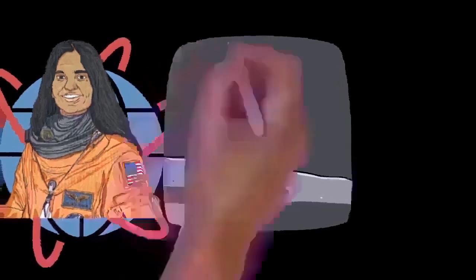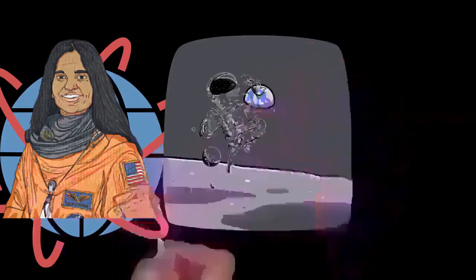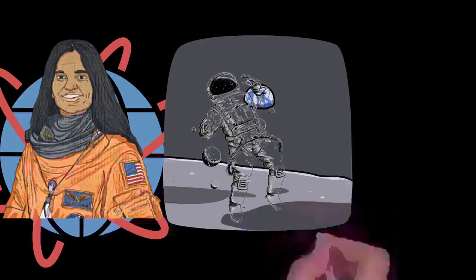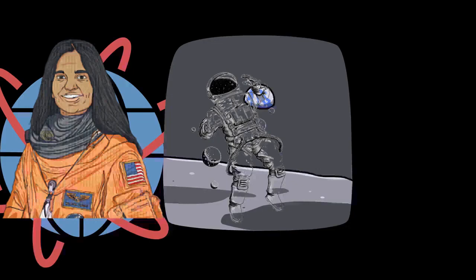Kalpana Chawla was born on March 17, 1962, to a Punjabi Hindu family in Karnal of present-day Haryana, India. She had early interest in aeroplanes and flying. She went to local flying clubs and watched planes with her father. Her date of birth was falsified by her family to July 1, 1961, to allow her to become eligible for the matriculation exam.